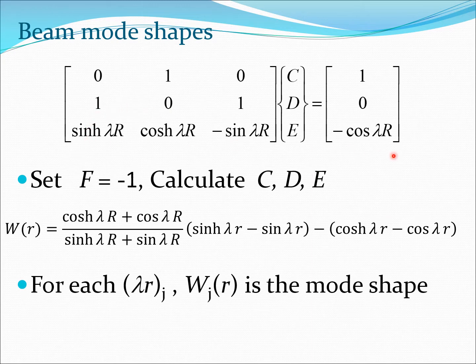Now from this equation we can calculate wr because now we know all these coefficients. We have set f is minus 1 and if you look carefully at these three equations you see the first equation tells you that d equals 1, the second equation tells you that c plus e equals 0 or c is minus e.